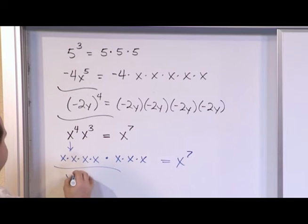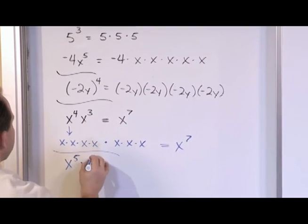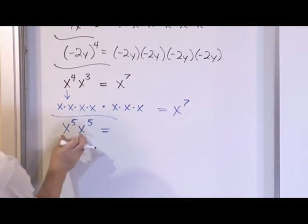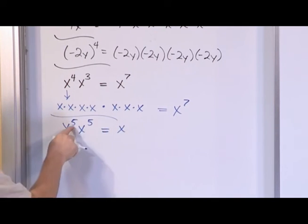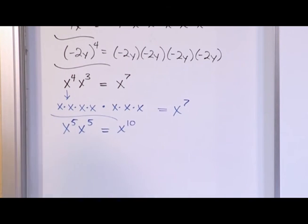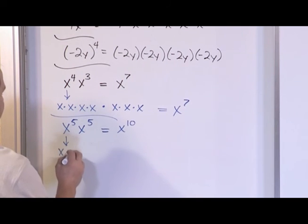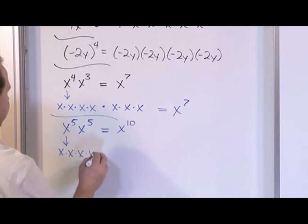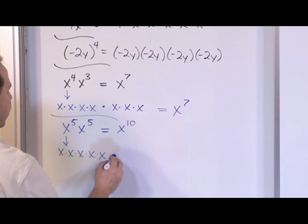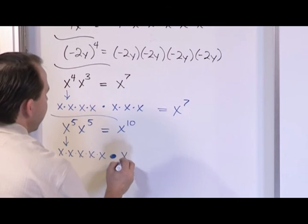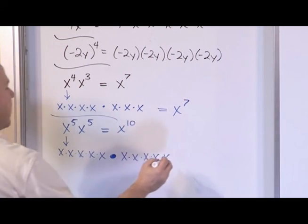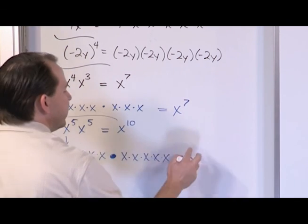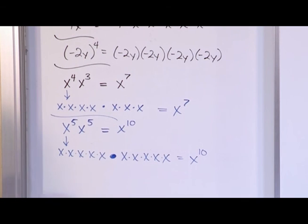What if you had x to the 5 times x to the 5? First thing you check: are the bases the same? I have x and I have x — so yes, I can multiply this together. I'm going to add the exponents and I'm going to get x to the power of 10. This is x times x times x times x times x, multiplied by x times x times x times x times x — so I have x multiplied by itself 10 times. That's why you add exponents together.